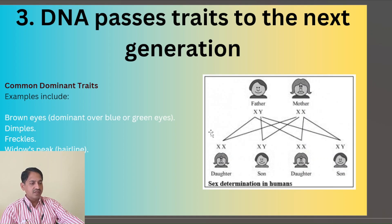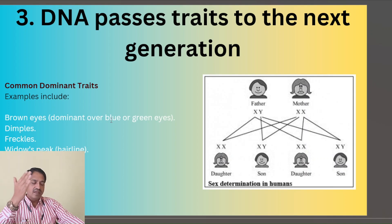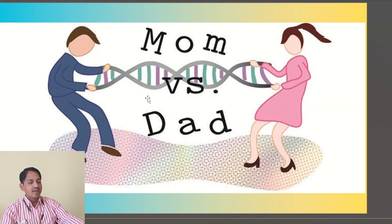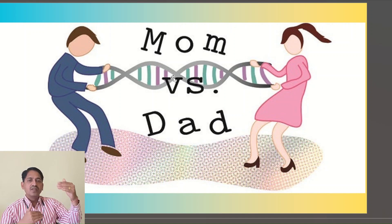The third and most important function is that DNA passes traits to the next generation — that is from parents to offspring. Some dominant characters are also there. For example, brown eye is one of the dominant characters. If either your mom or dad has brown eyes, the brown eye trait will get expressed in the child, whether it is a daughter or a son. 50% of characters come from mother and 50% from father — the upper limit of character transfer is 50% only.